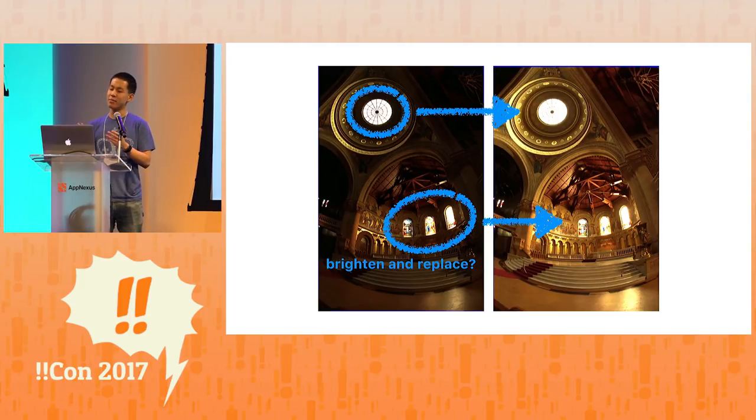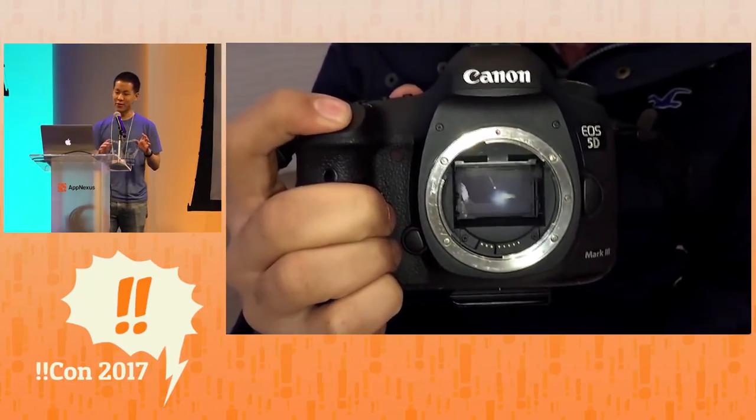We also need to brighten them up a little bit, because the picture on the right is brighter, and we want everything to match up. Now, the problem here is that we don't know how much we should brighten up this image. So let's learn about cameras for 30 seconds.